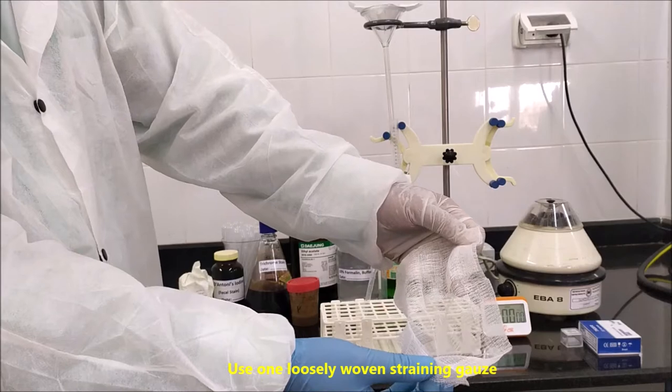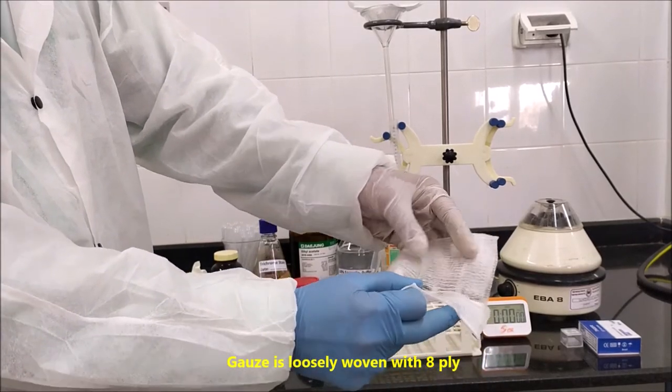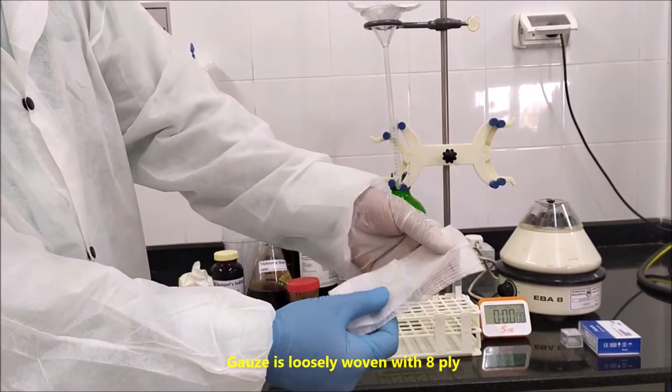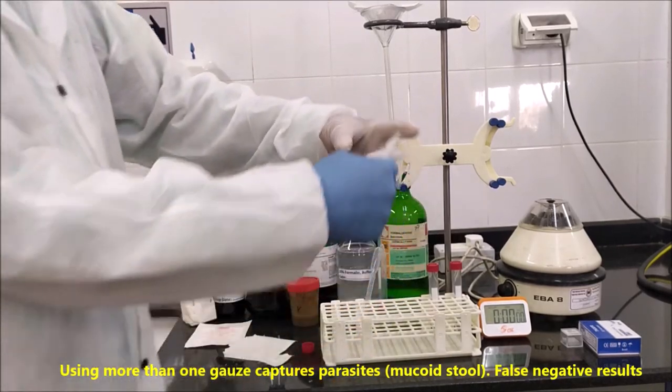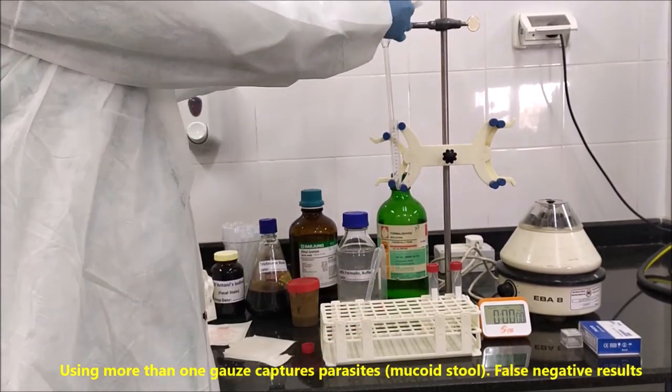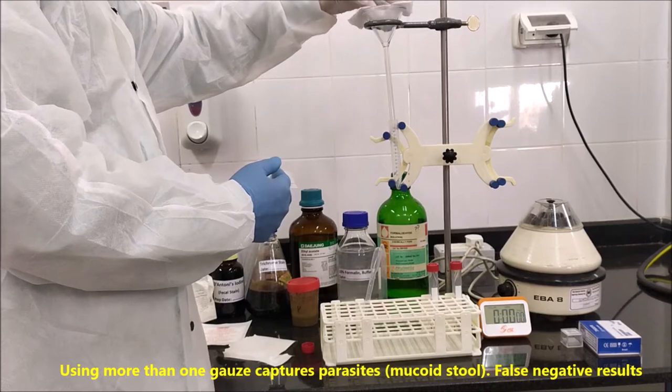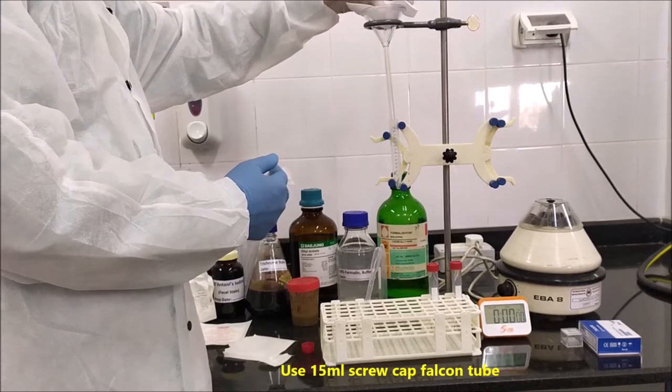Use one loosely woven straining gauze. Gauze is loosely woven with 8-ply. Using more than one gauze captures parasites, especially in mucoid stool, resulting in false negative results. Use 15ml screw-cap falcon tubes.